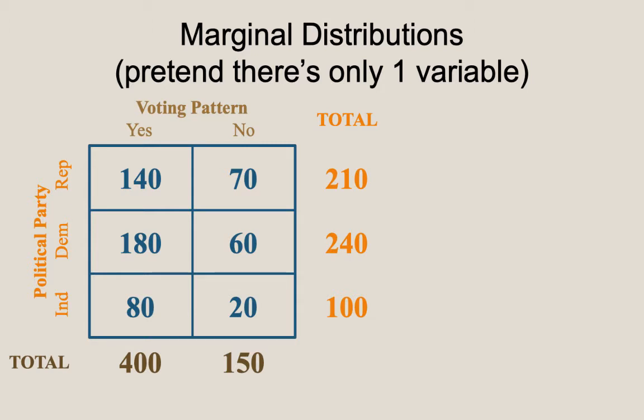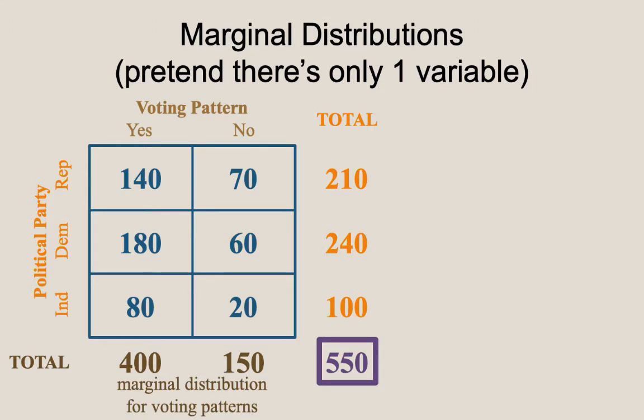The marginal distribution gets its name from the fact that the information is often recorded in the margin of the table. There were 400 yeses and 150 noes. I could alternatively do the same thing for each row by collapsing across columns, giving a total column reporting how many of each political party there were: 210 Republicans, 240 Democrats, and 100 Independents. Adding up the total column or total row gives the same value of 550, the total sample size. This gives us the marginal distribution for voting patterns and for political party.